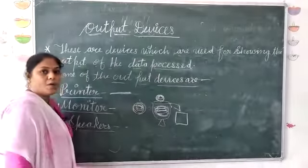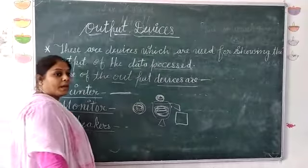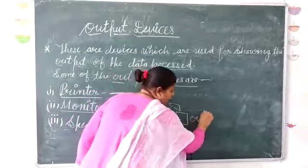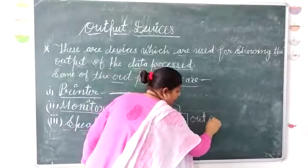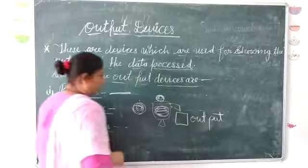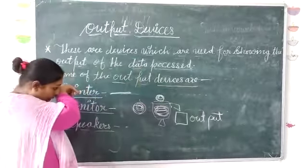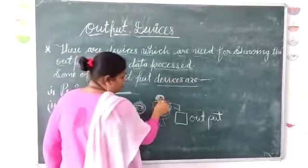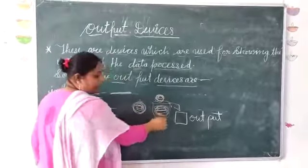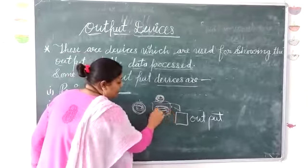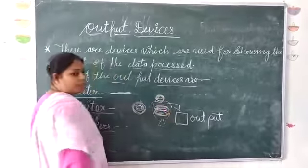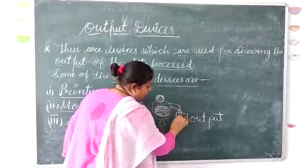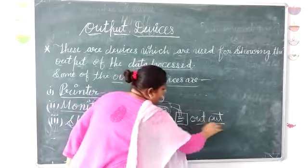So what is this? Output. We will put it in the mixer and make juice. We will also put the juice in the mixer. The first thing is Output.